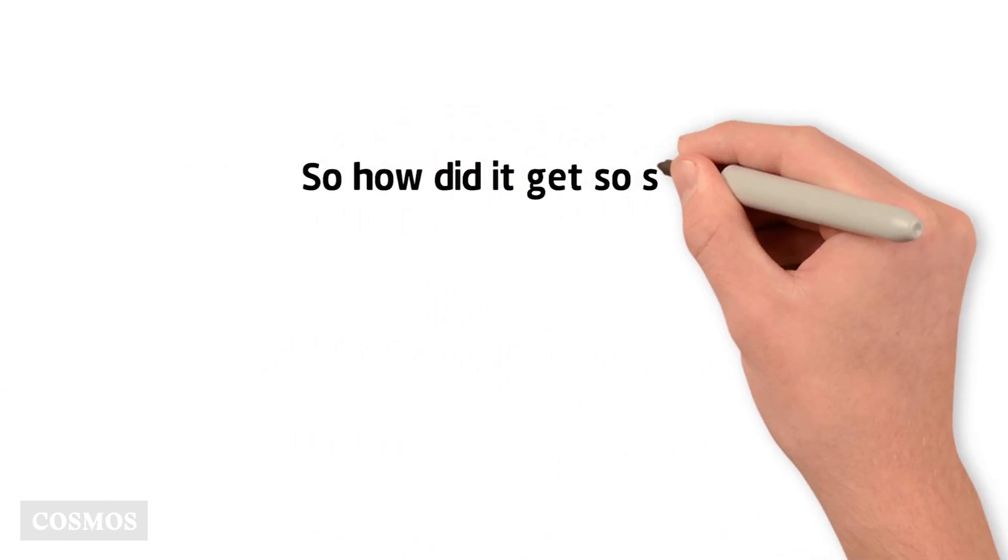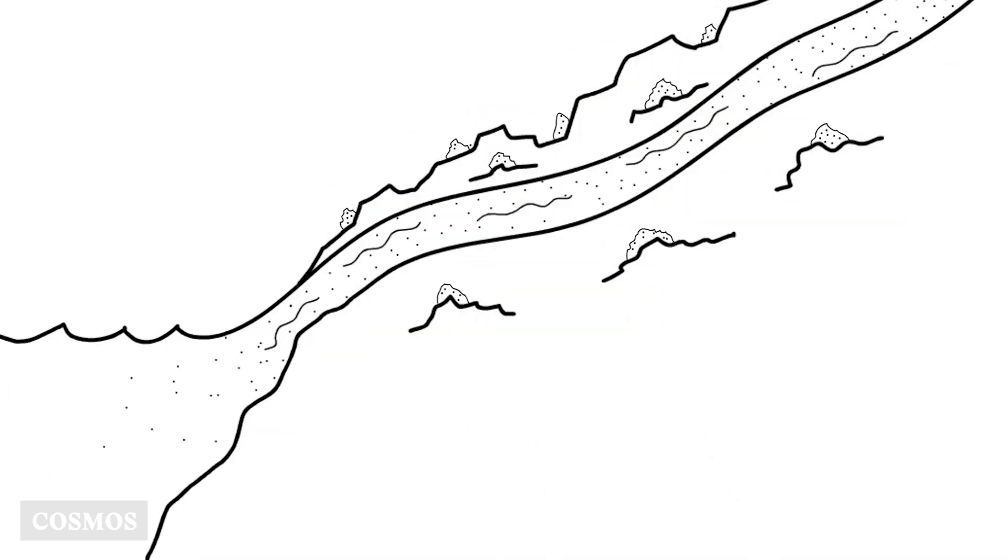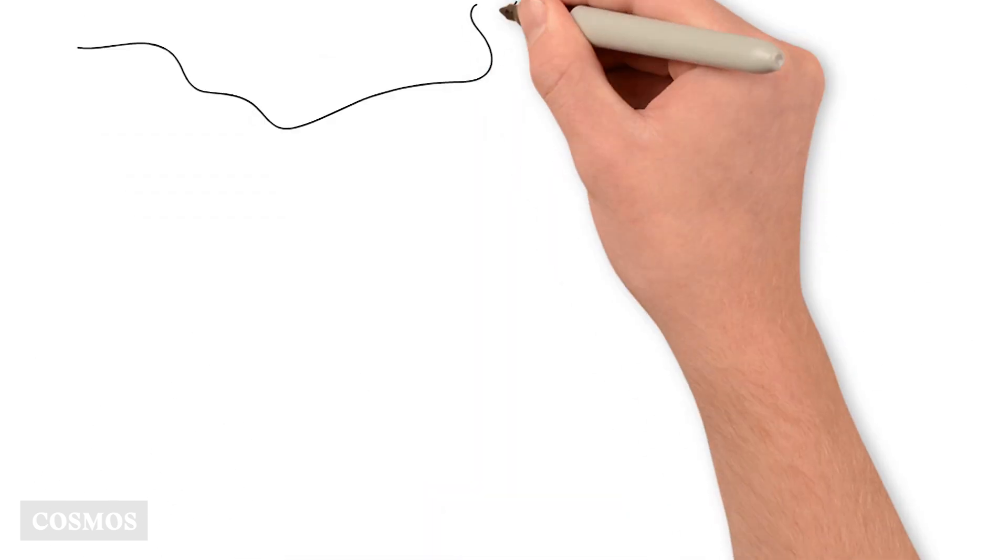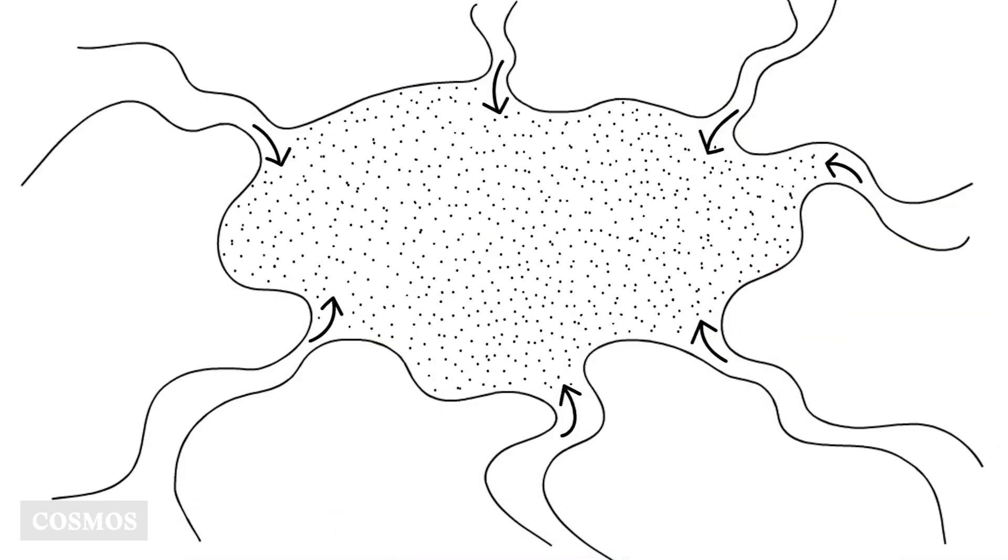So how did it get so salty? Rivers flowing into the Dead Sea carry salt dissolved from the surrounding rocky landscape, but because the sea is landlocked, once the salt arrives there, there's nowhere else for it to go.